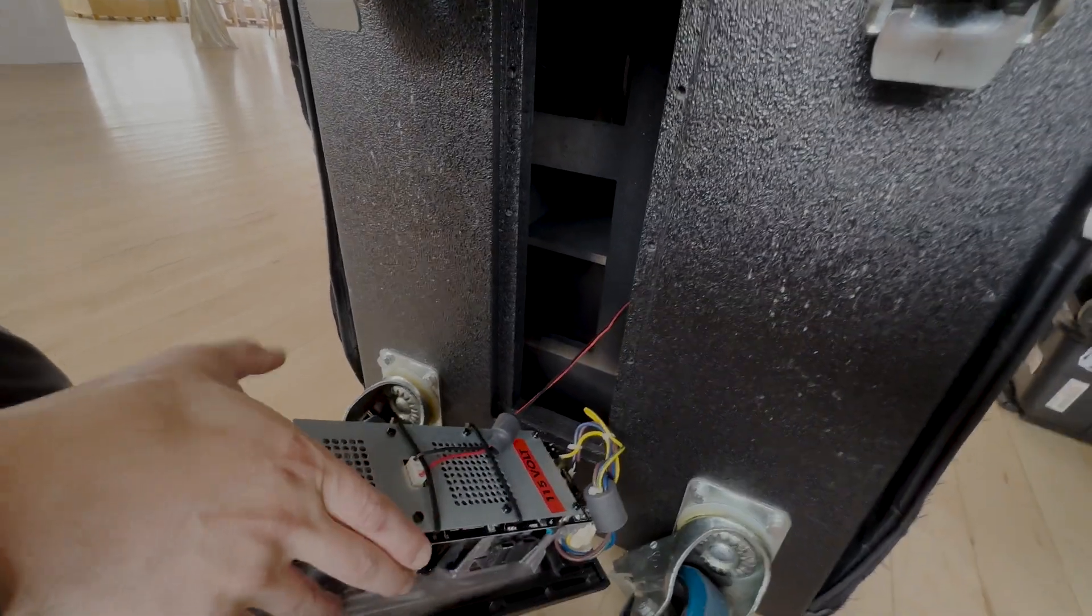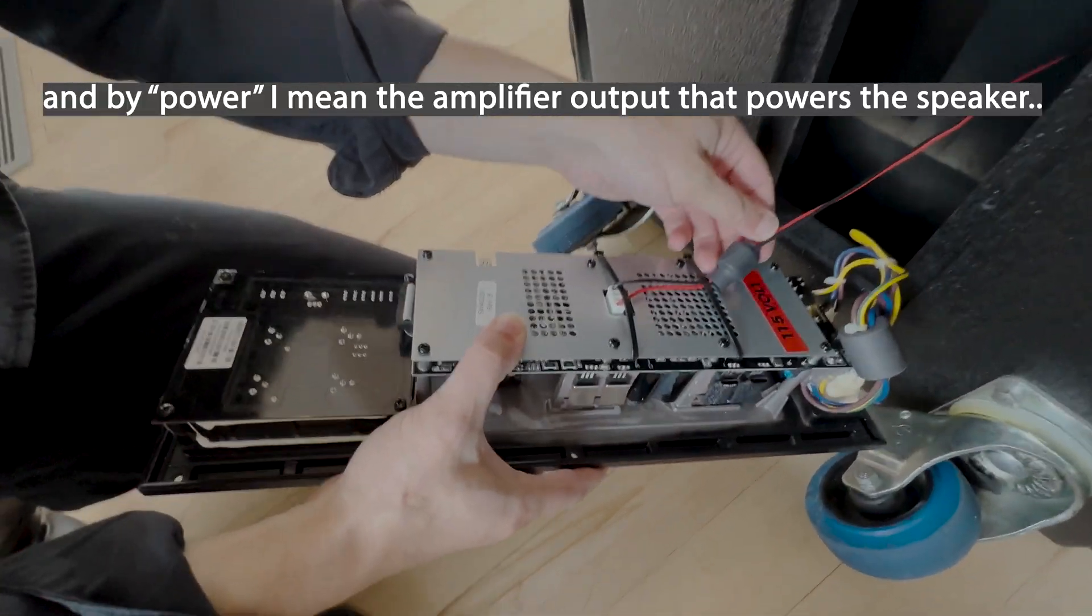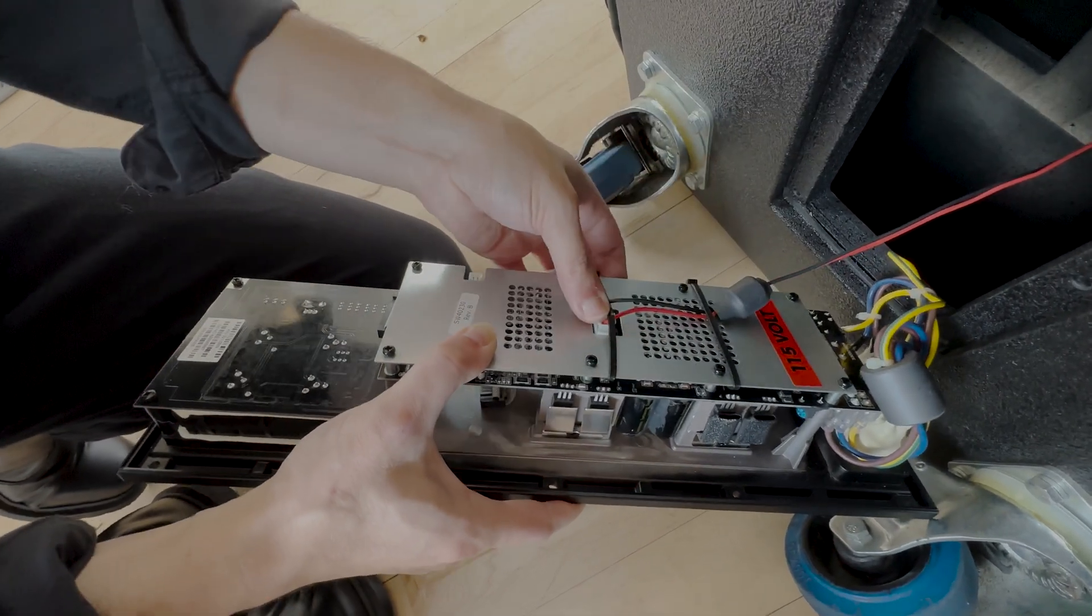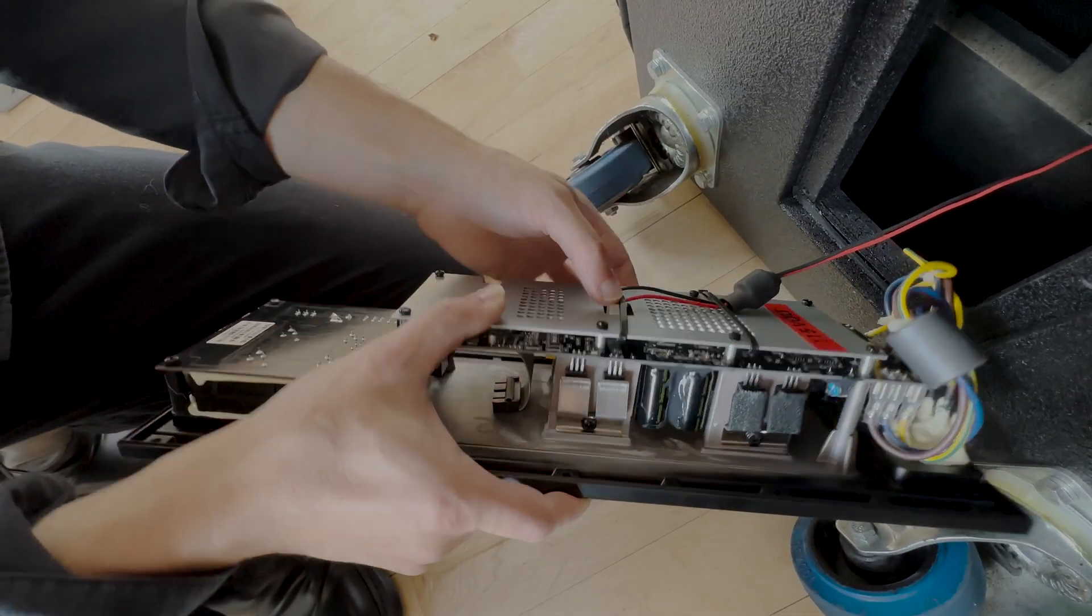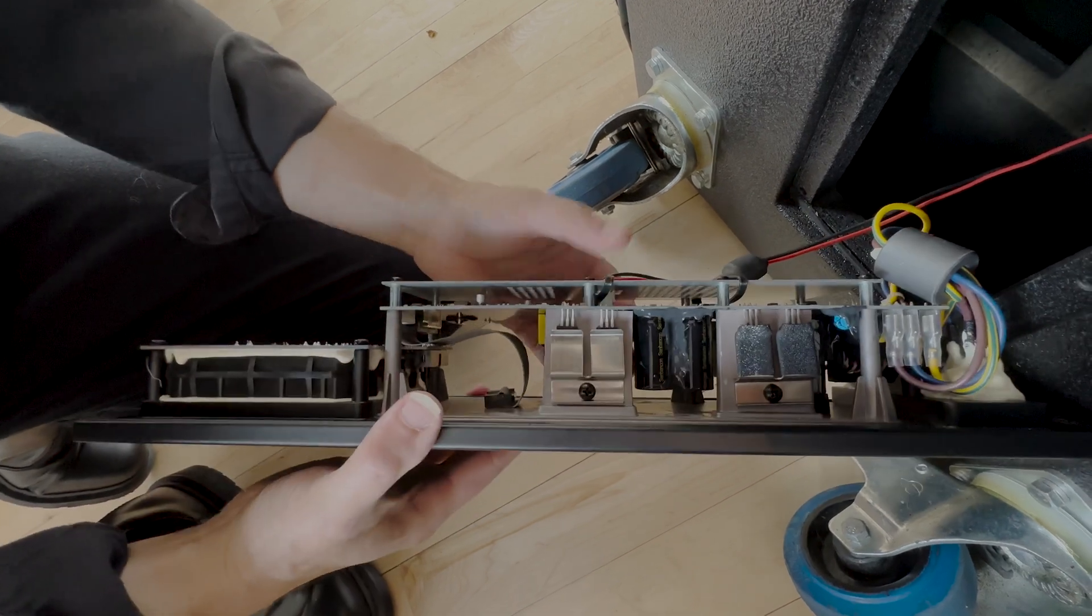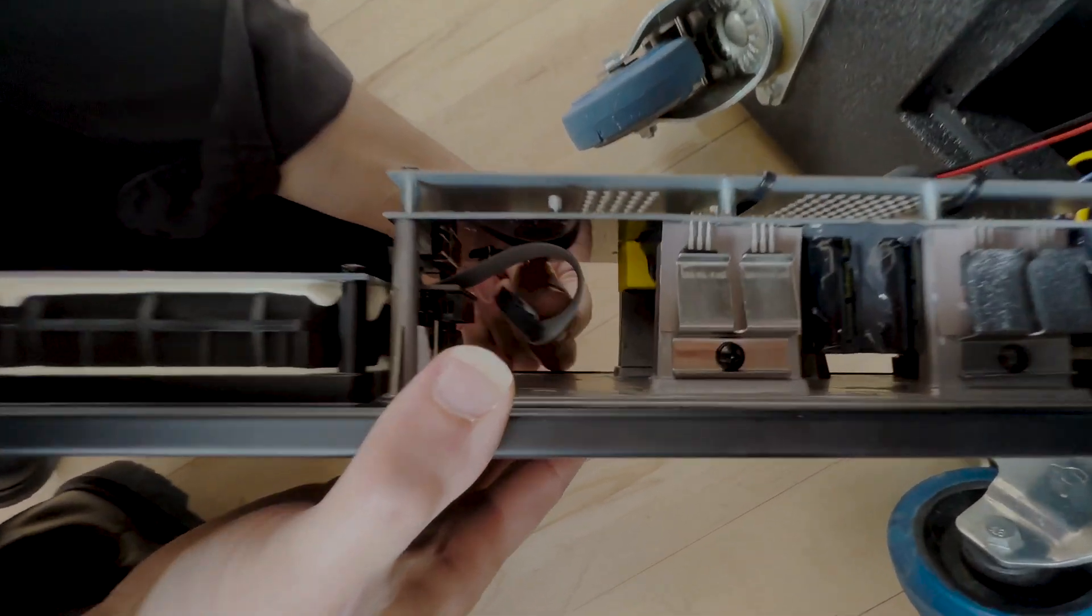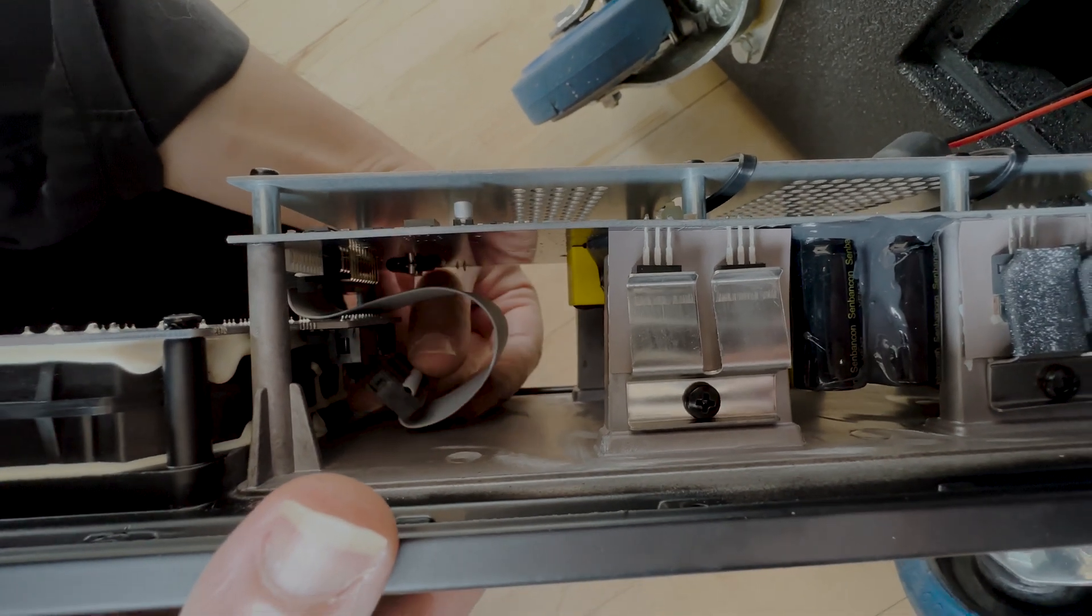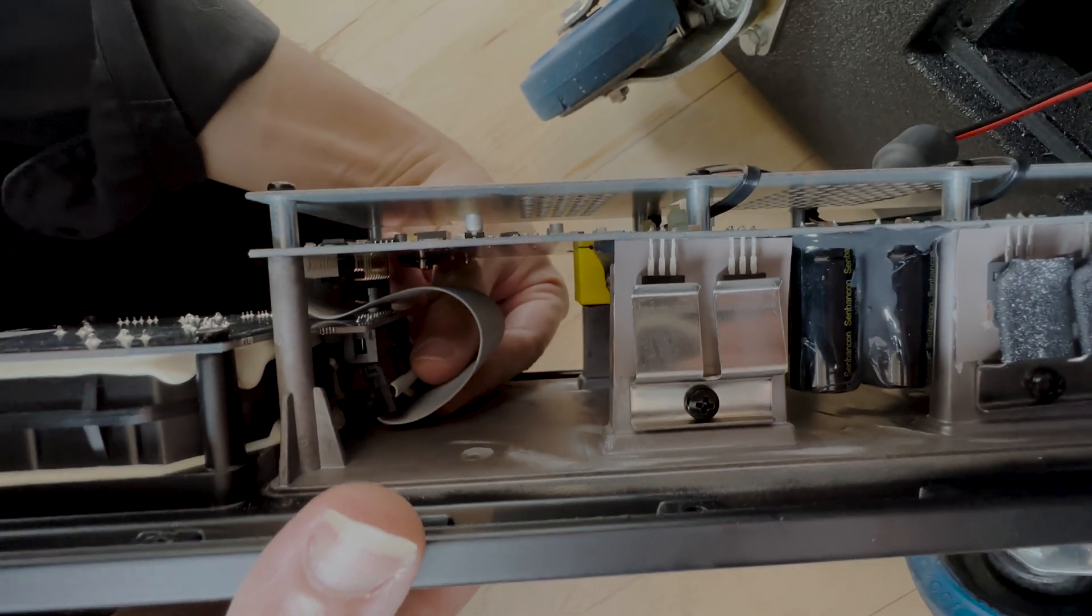So obviously this is power right here, the black and the red. I'm just checking to make sure that this pin is seated in here. Oh, and there's our culprit right here. See this ribbon cable just like this? This goes into this socket on this PCB right here.